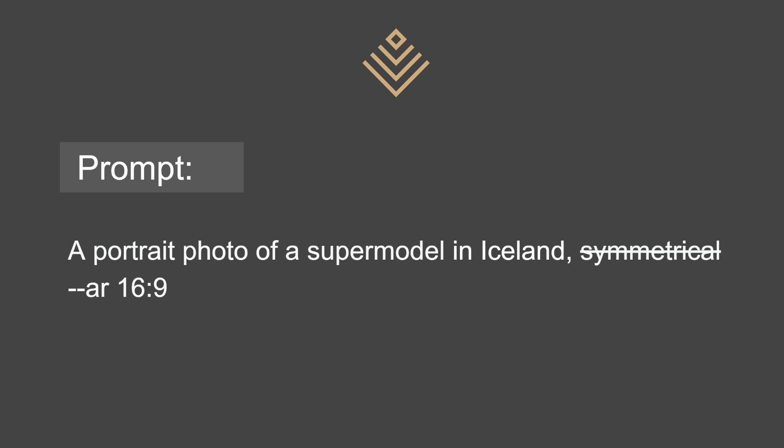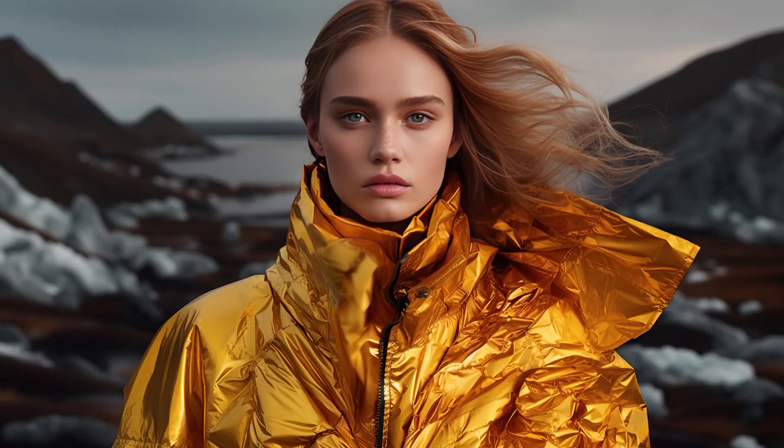Next, I'm going to keep 'photo' and take out 'symmetrical.' When you have symmetrical in the prompt, the subject is placed pretty much in the middle and both sides are the same. Once you take it out, you start seeing variations — the model is at more of an angle, and there are differences behind her, so it's definitely not symmetrical. This gives, in my opinion, a bit more of an organic look, which could be something you're after. Personally, sometimes I prefer symmetrical, and sometimes I like the more organic look.